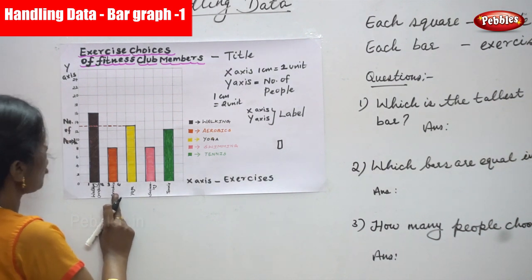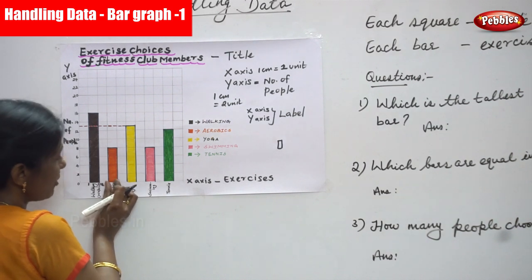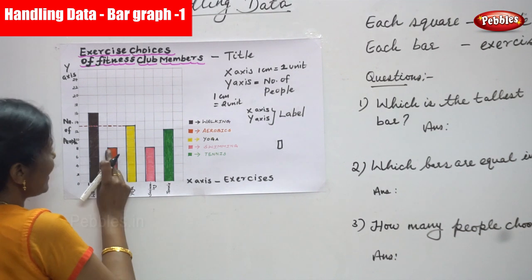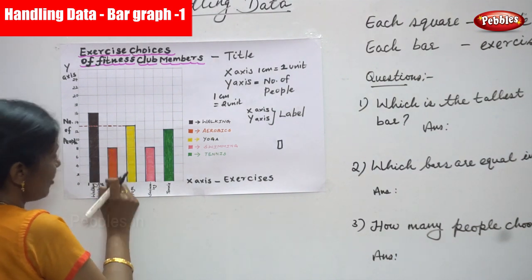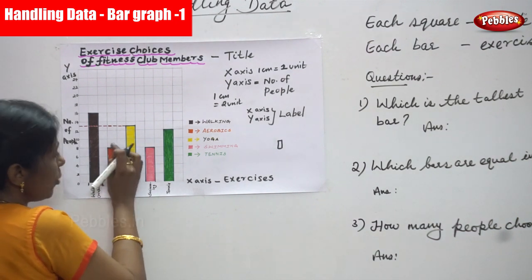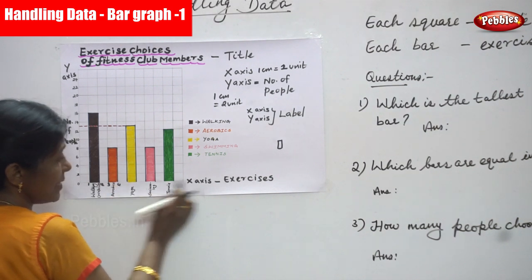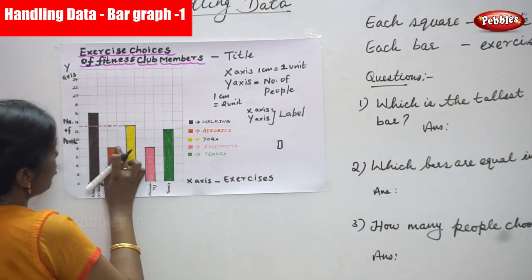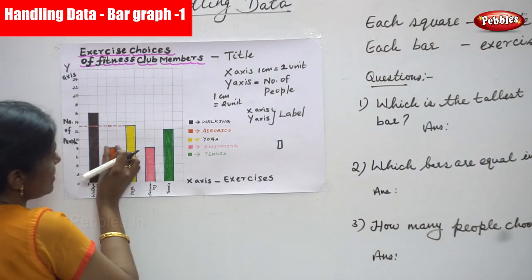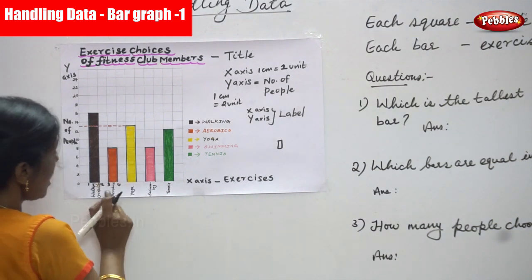Next, how many people chose aerobics? Eight people chose aerobics. From the x-axis to y-axis, aerobics is on the x-axis and 8 is the number of people. I draw the vertical bar from x-axis up to 8 and shade it in orange color.